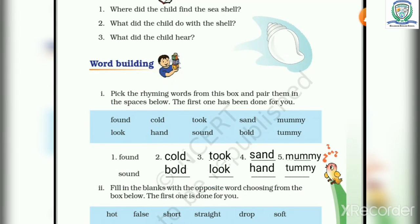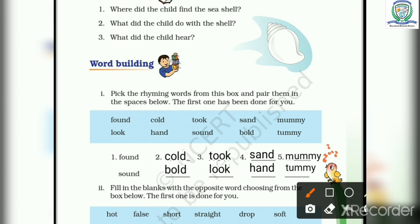Next is word building. Pick the rhyming words from this box and pair them in the spaces below. The first one has been done for you. Hamei yahaan par rhyming words ke pairs binaane hai. Sab se pahele hai found. To found ka rhyming word hoota hai sound. Cold ka rhyming word hai bold. Took ka rhyming word hai look. Sand ka hand or mummy ka rhyming word hai tummy.